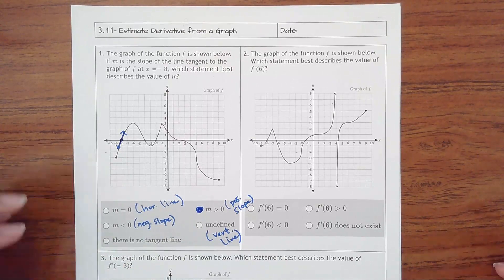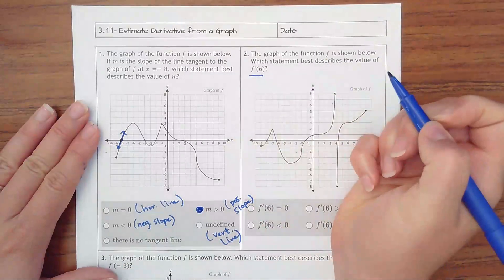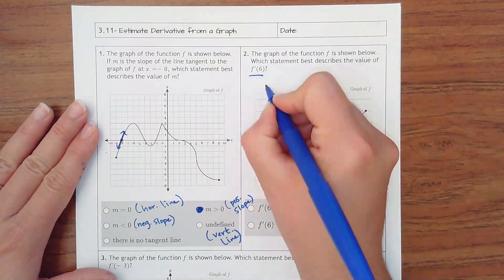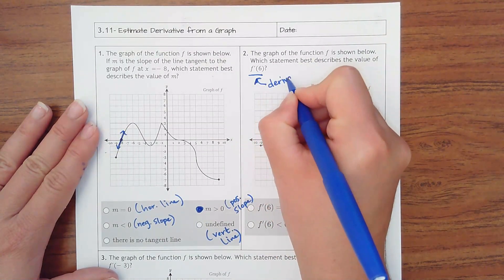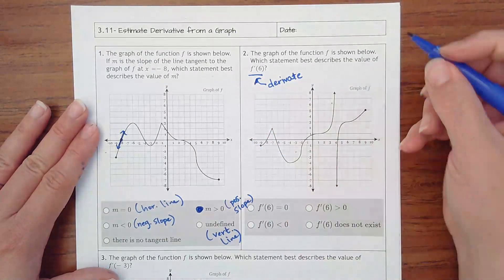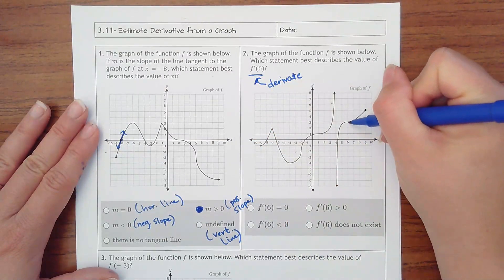Number 2, same thing. We've got a function. Look at how this notation is written: f prime of x. That is a way to say the derivative, or the slope at 6. So you would find where x is 6 and find the point.